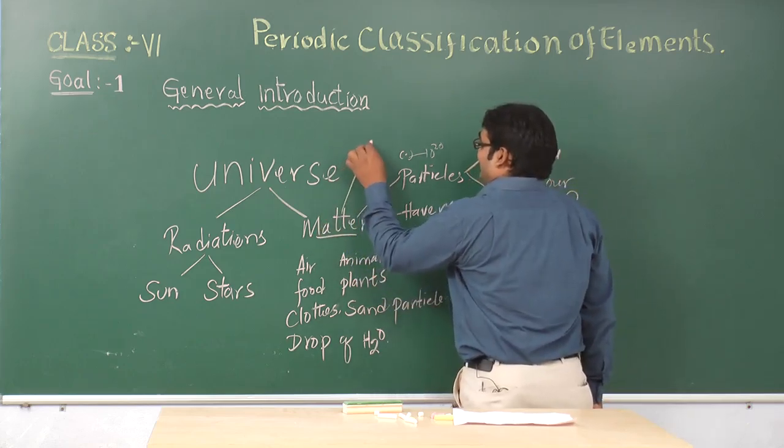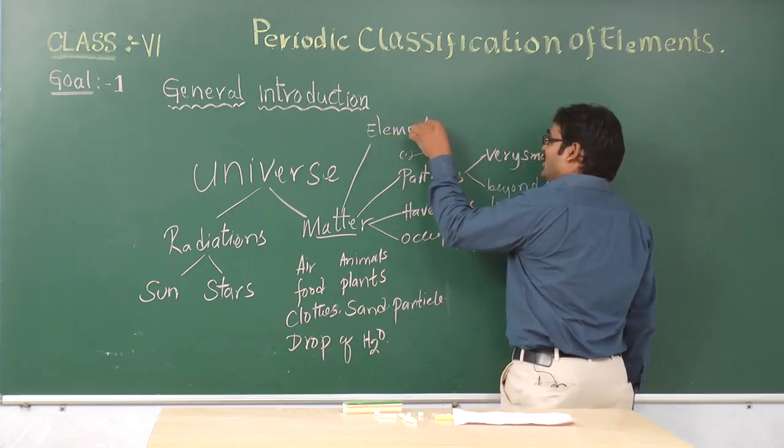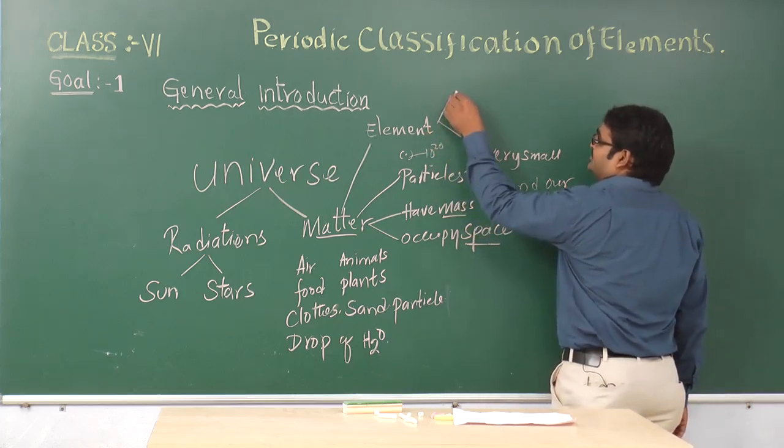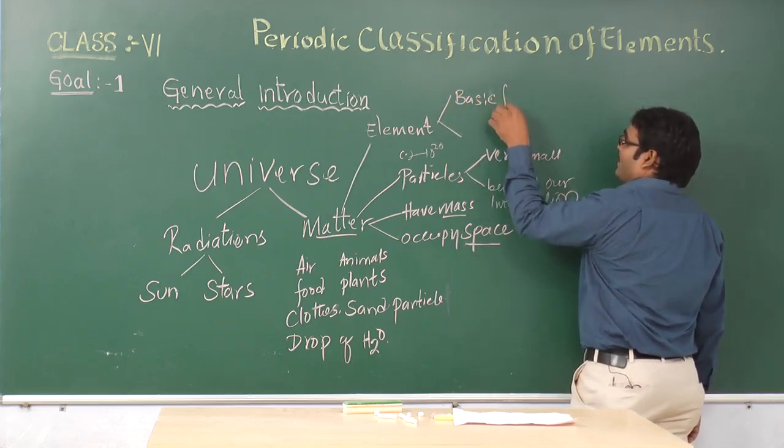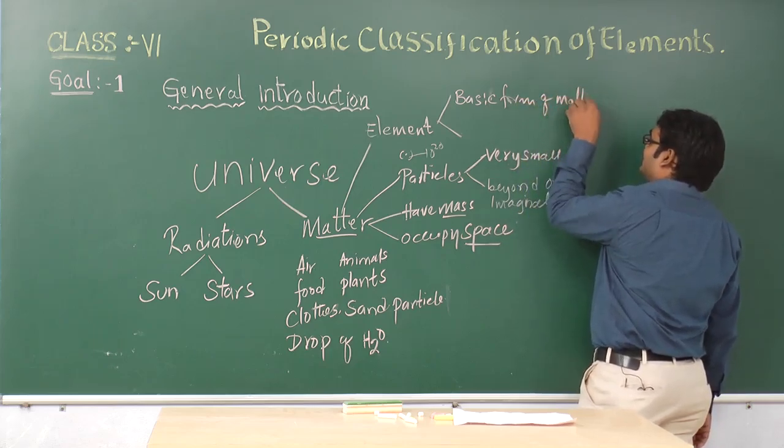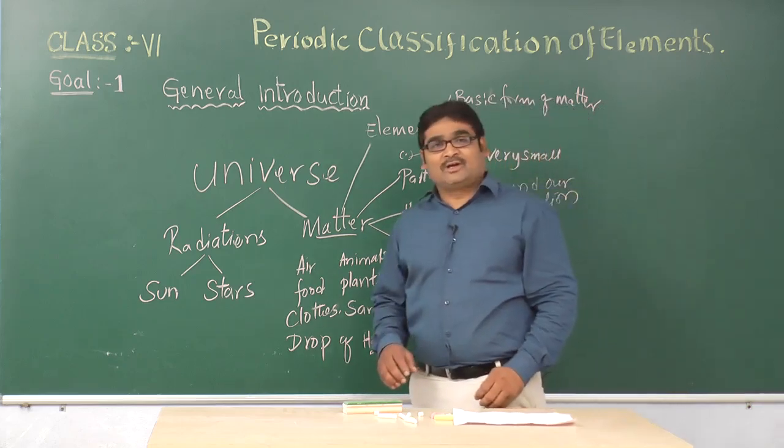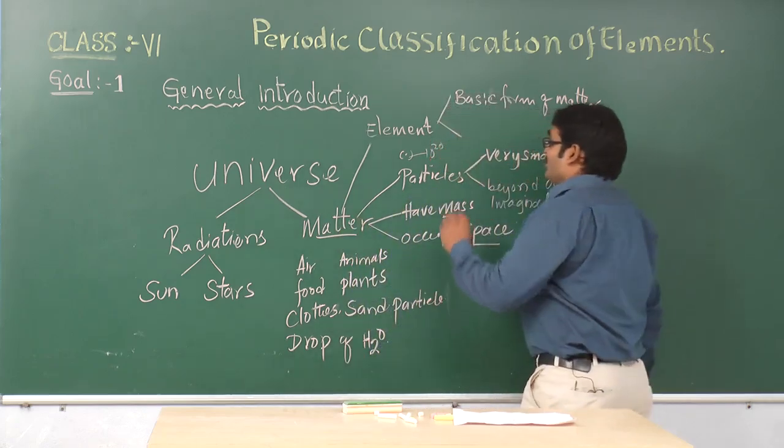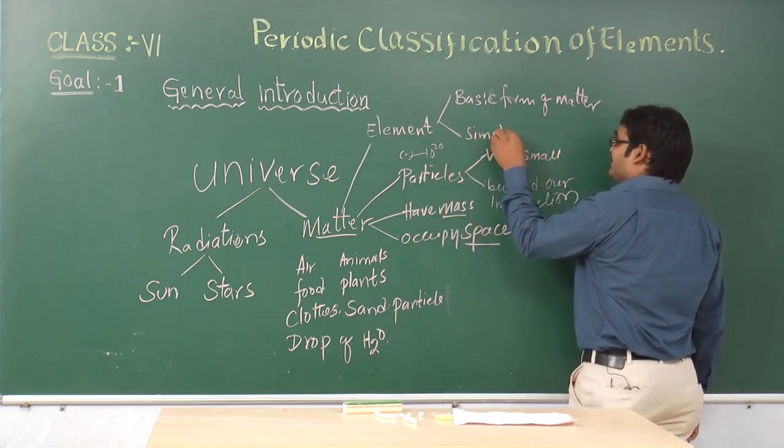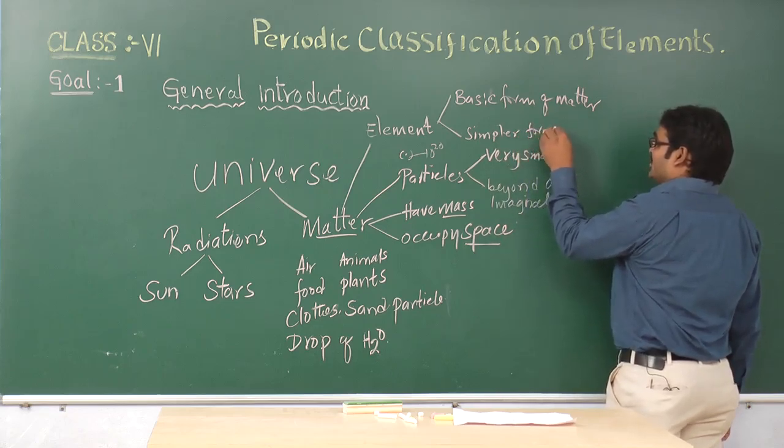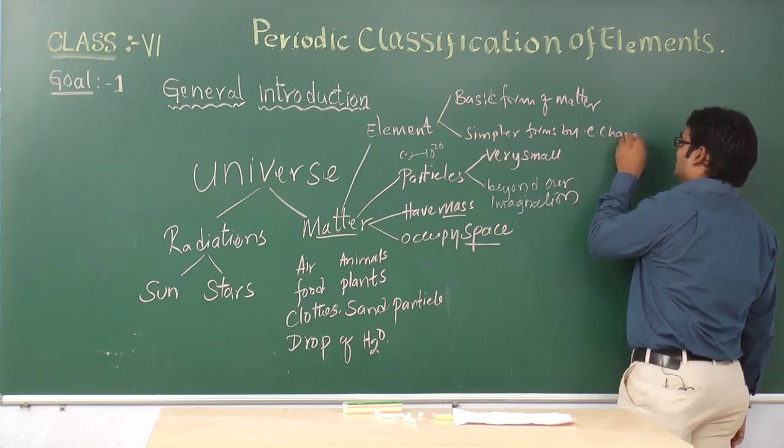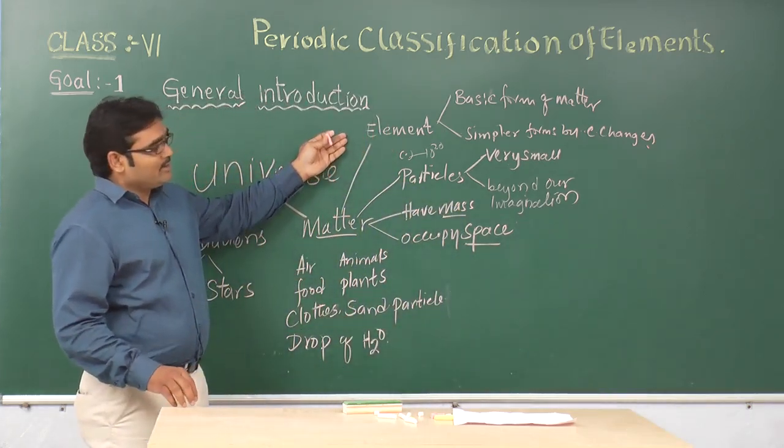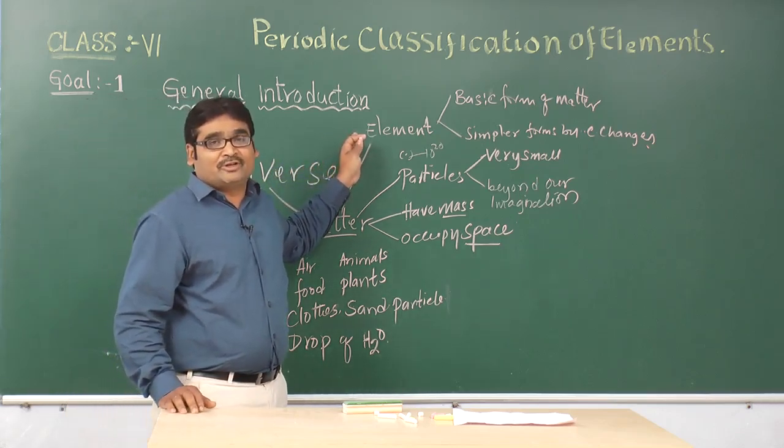So here under matter, we also come across the element, which is also a tiny particle. What is an element? Element is the basic form of matter which cannot be further subdivided into simpler form by chemical changes or by chemical processes, which cannot be divided into simpler singular forms by chemical changes. So according to John Dalton, he said element is such a tiny small particle which cannot be further subdivided.